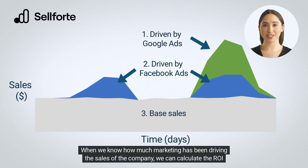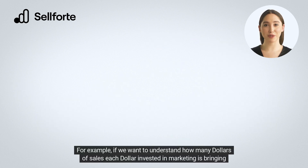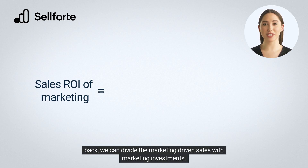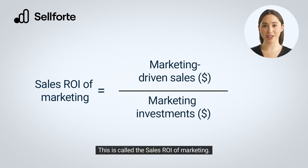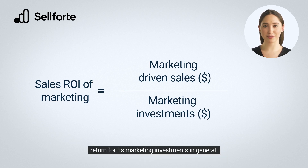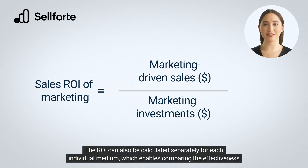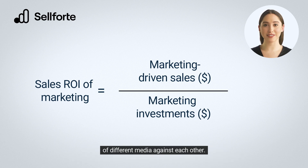When we know how much marketing has been driving the sales of the company, we can calculate the ROI of marketing. For example, if we want to understand how many dollars of sales each dollar invested in marketing is bringing back, we can divide the marketing-driven sales with marketing investments. This is called the sales ROI of marketing. The ROI can also be calculated separately for each individual medium, which enables comparing the effectiveness of different media against each other.